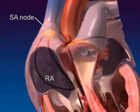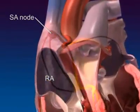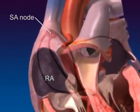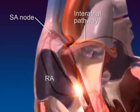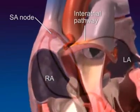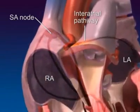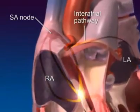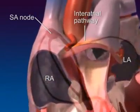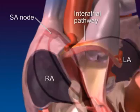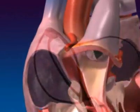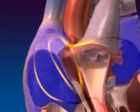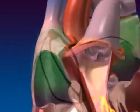The pacemaker potentials swiftly move through the interatrial pathway to the left atrium and spread throughout the atrial myocardium via gap junctions. As a result, both atria depolarize and contract as a single unit.